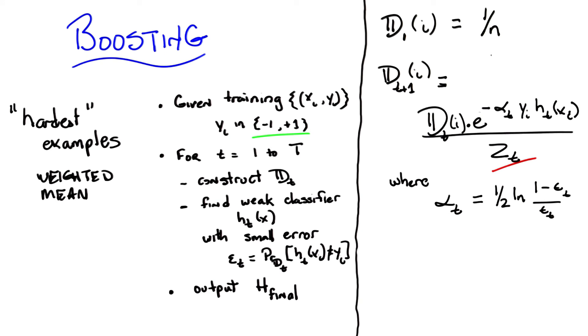Right, and since the ones that it's getting wrong are getting more and more weight, but we're guaranteed, or at least we've assumed, that we have a weak learner that will always do better than chance on any distribution, it means that you will always be able to output some learner that can get at least some of the ones that you were getting wrong.